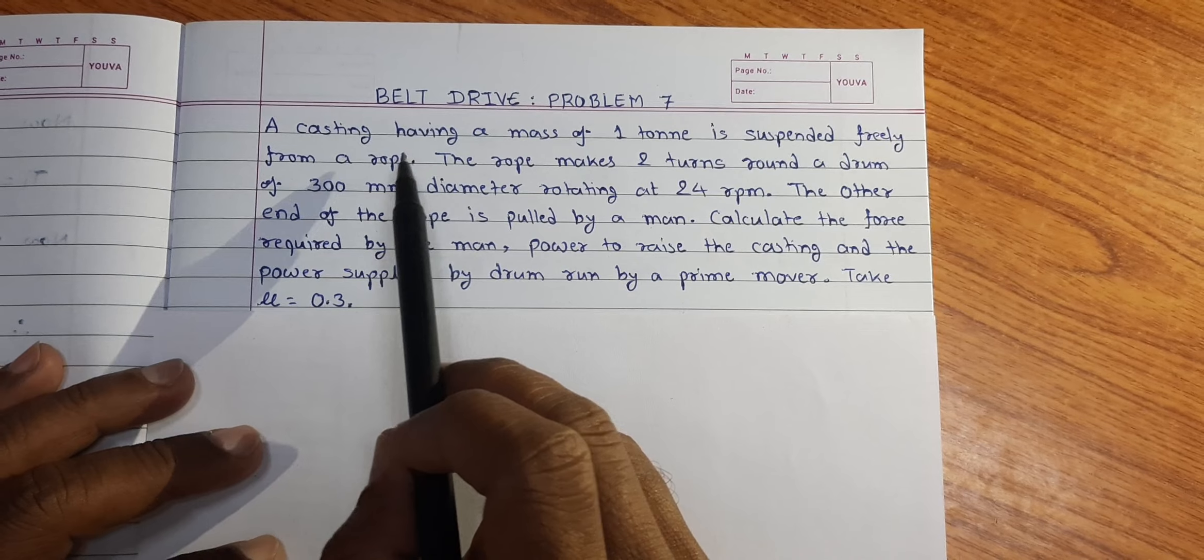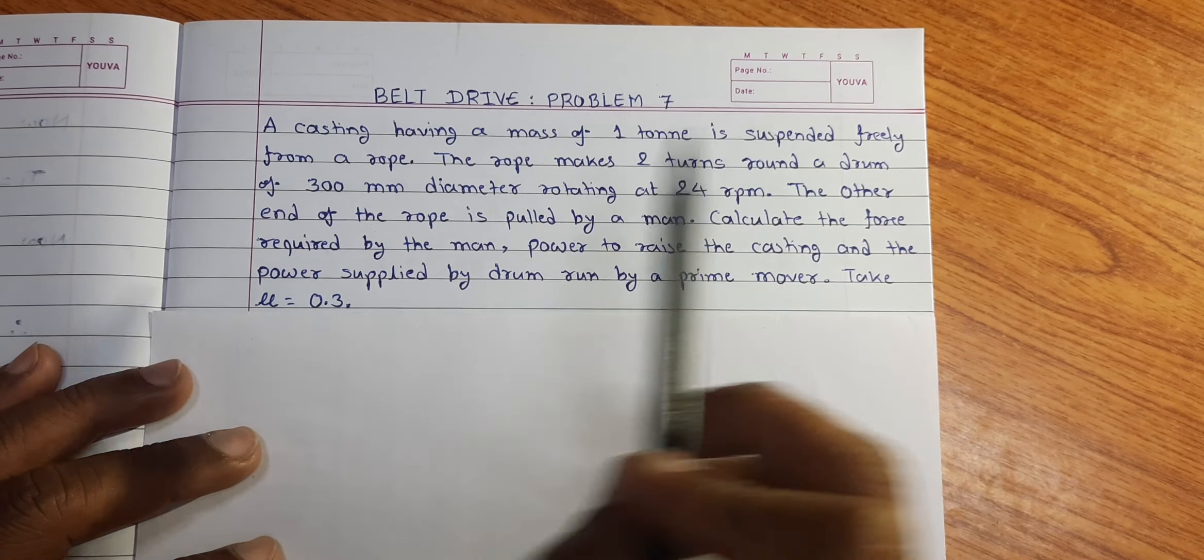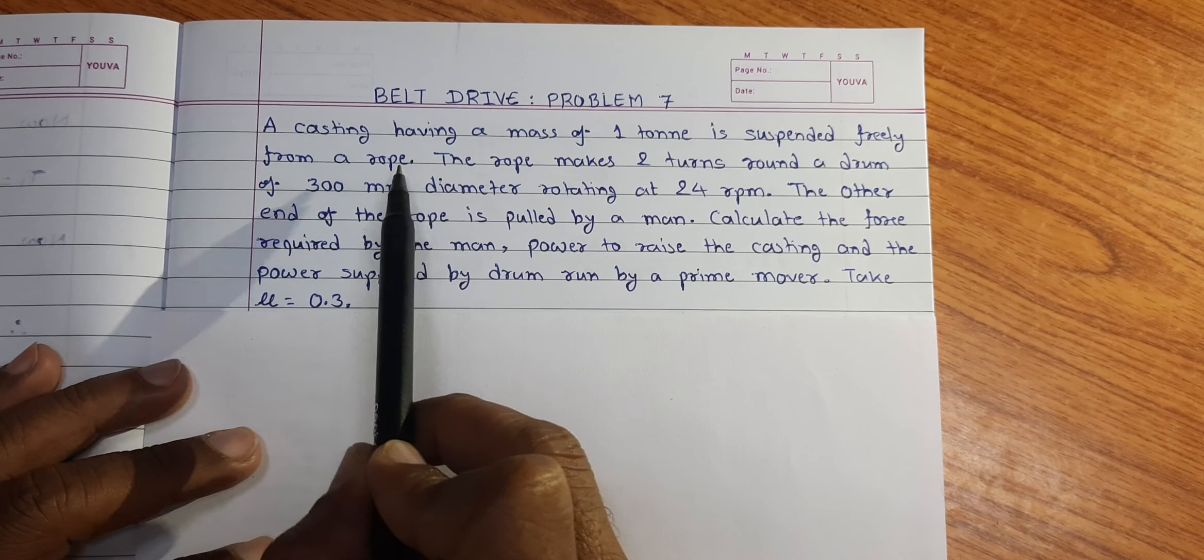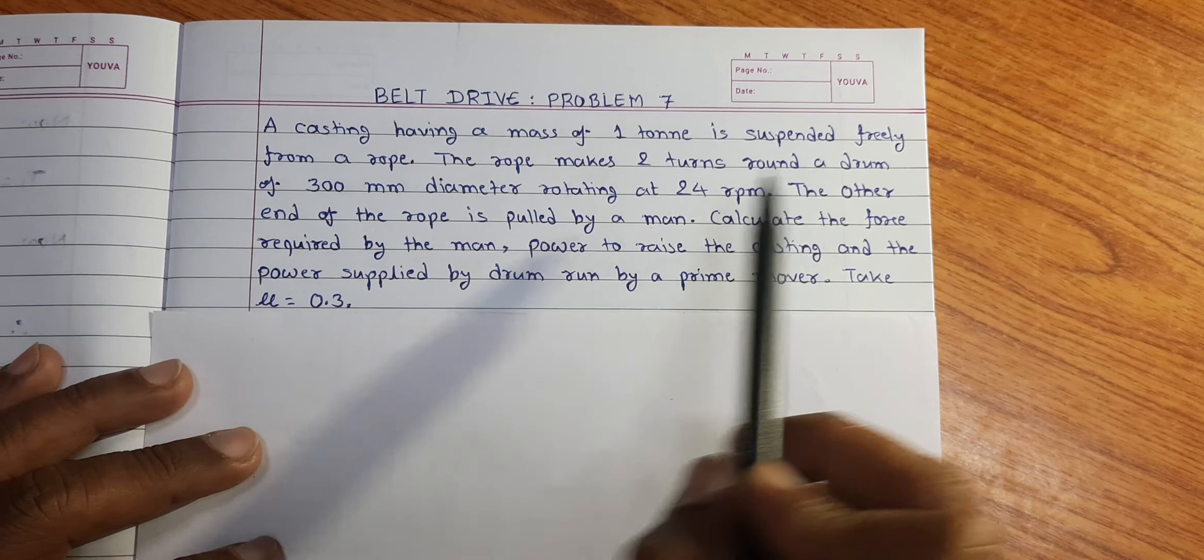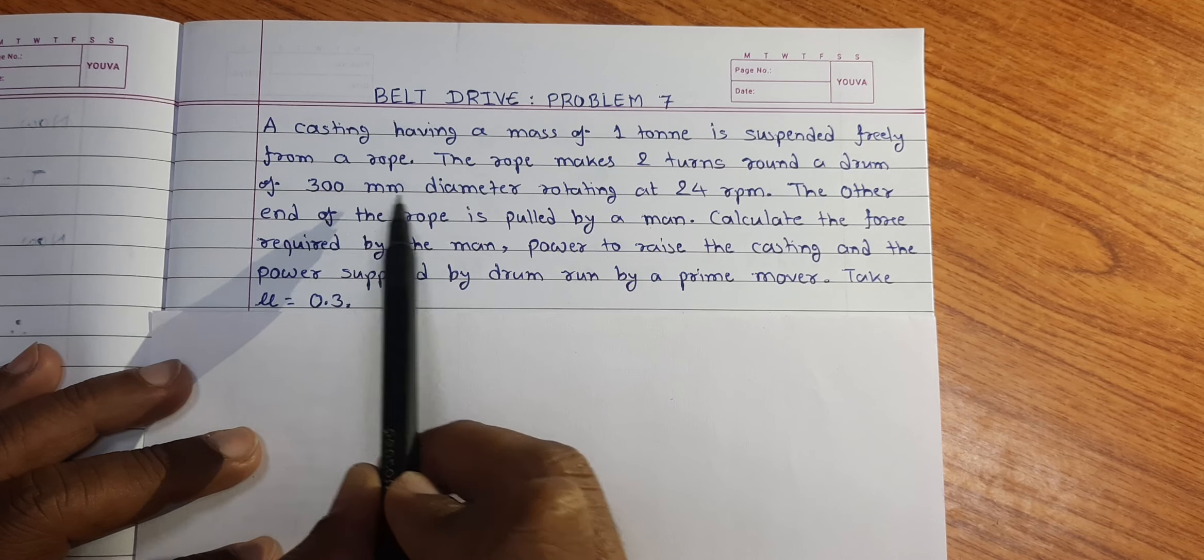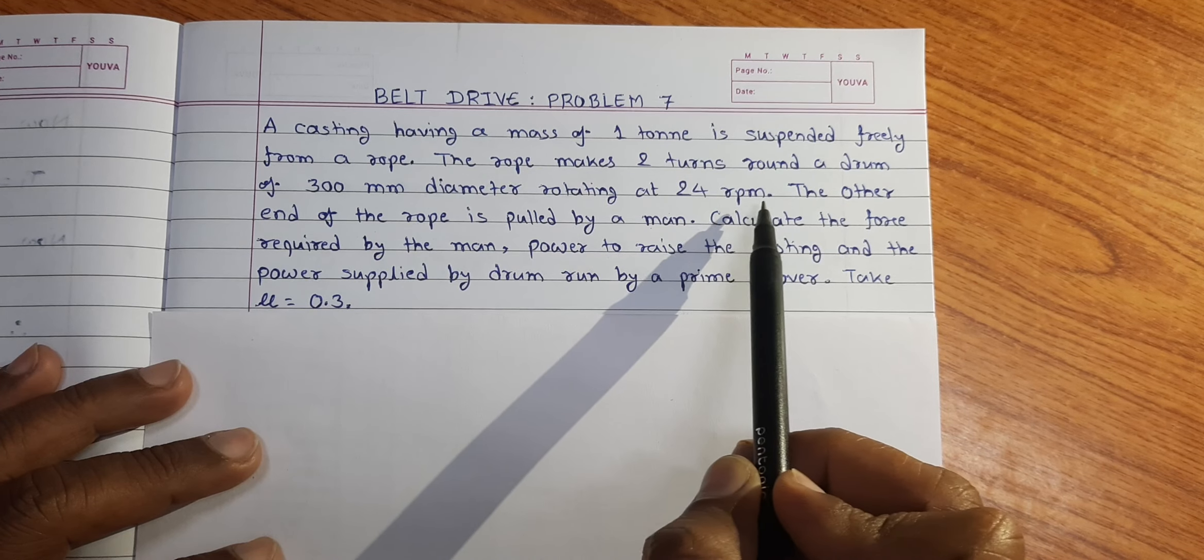A casting having a mass of 1 ton is suspended freely from a rope. The rope makes 2 turns around a drum of 300 mm diameter, rotating at 24 rpm.